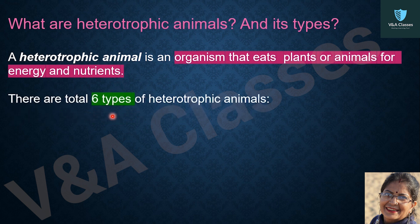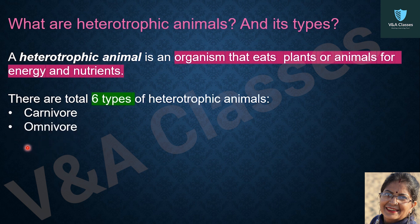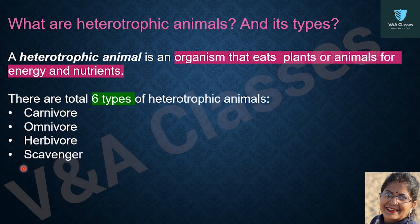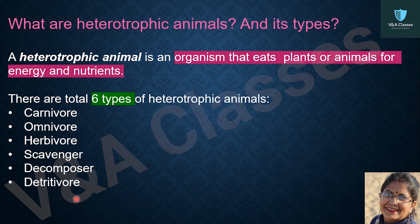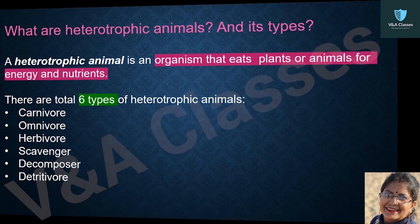There are a total of six types of heterotrophic animals: carnivore, omnivore, herbivore, scavenger, decomposer, and detritivore. Now we will define all of them in one sentence each.